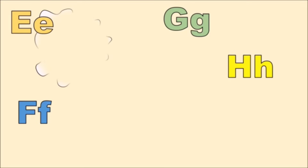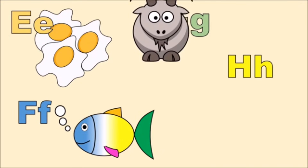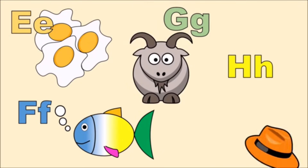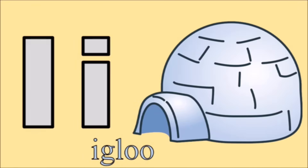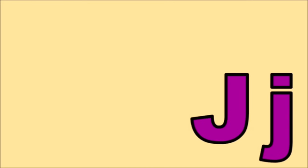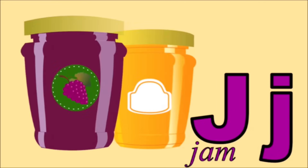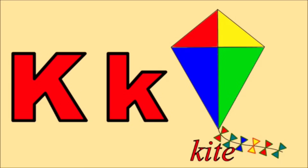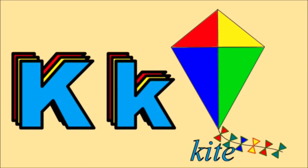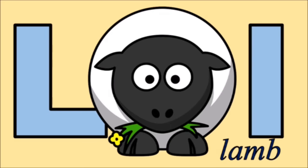I for Igloo. J for Jam. K for Kite. L for Lamb.